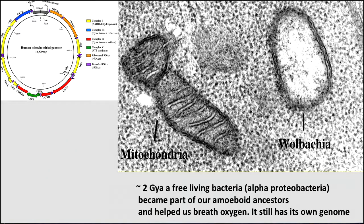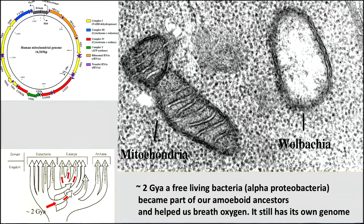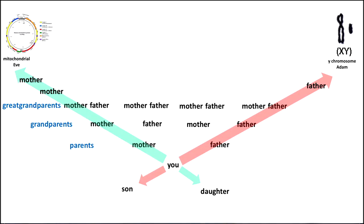The mitochondria you have in your body you inherited from your mother, and your mother got it from her mother, and so on. Now, if you're male, you have a Y chromosome, which you got from your father, and your father got it from his father, and so on. So when you look at mitochondrial DNA, you're looking along the maternal line into the past — not at any other ancestors. If you look at the Y chromosome, you're just looking at the paternal line.